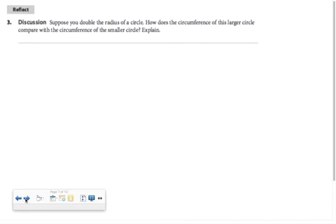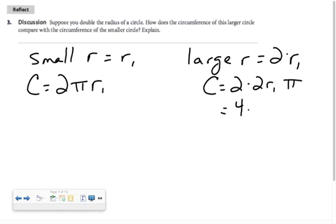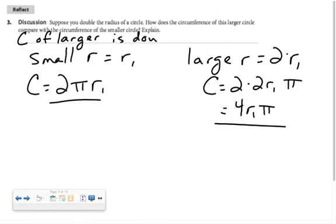So, suppose we double the radius of a circle. How will the circumference of the larger circle compare with the circumference of the smaller circle? So, let's say the small R, let's call it R1. So, the circumference would be 2 pi times R1. Now, the large radius would be 2 times R1. So, its circumference would be 2 times 2R1 times pi. So, it would be 4R1 pi. Well, how do these values compare? Here, the circumference of the larger is double the circumference of the smaller.